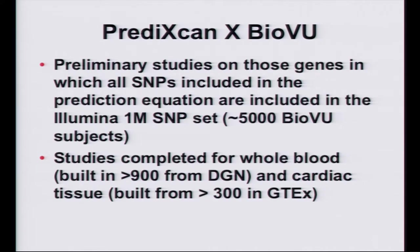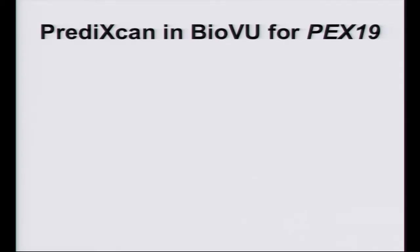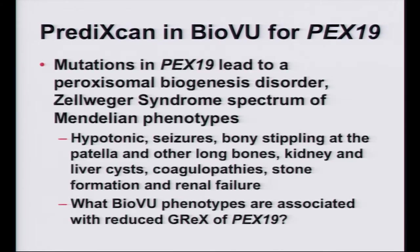We focused these preliminary studies on genes where all the SNPs in the prediction equation are directly interrogated on that product — either a whole blood predictor built from the depression gene network data because it's bigger than what we have in GTEx now, with more than 900 individuals, or cardiac tissue using left ventricle built from more than 300 individuals in GTEx. So we have 125 genes in that dataset, and it's already really interesting.